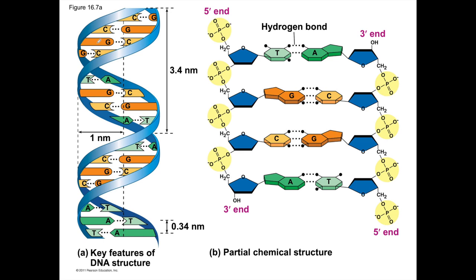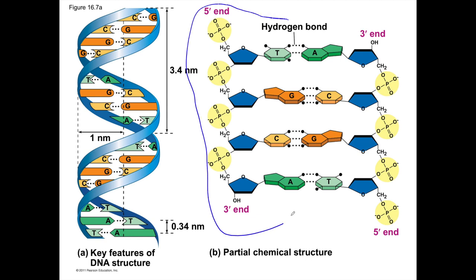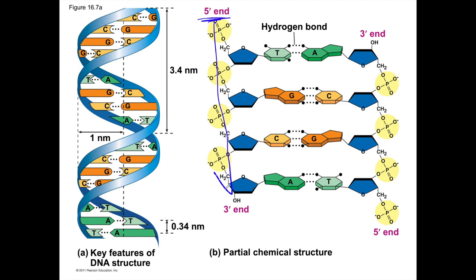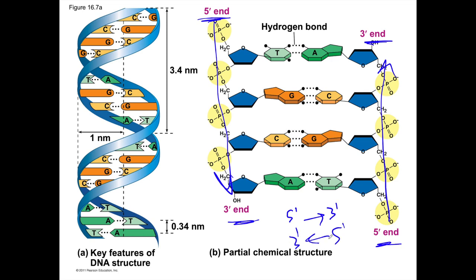If you look at the two strands of DNA, they look like they're parallel to each other, but they're actually anti-parallel. The strand on the left goes 5' at the top to 3' at the bottom, while the strand on the right goes 5' at the bottom to 3' at the top. So the two strands of DNA are anti-parallel — 5' to 3' goes in the opposite direction on the other strand.